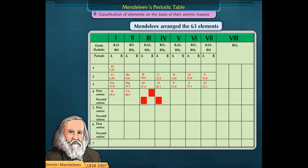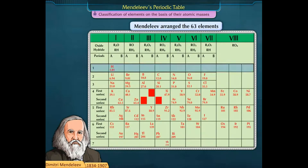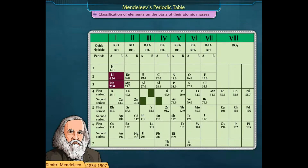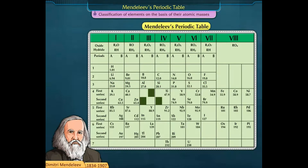Mendeleev arranged the 63 elements then known according to their properties in horizontal rows until he came across an element which had properties similar to the first element. He placed this element below the first element and thus started the next row of elements.